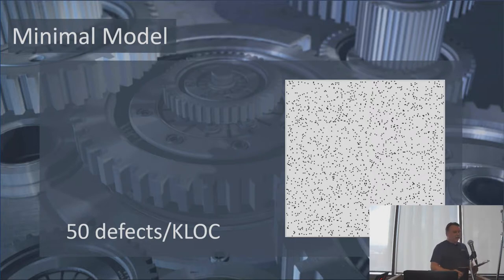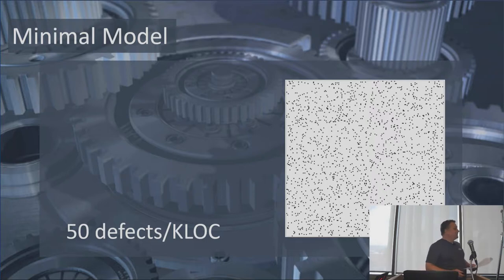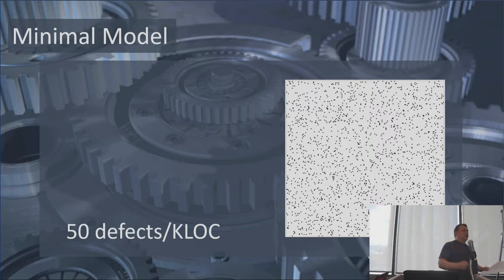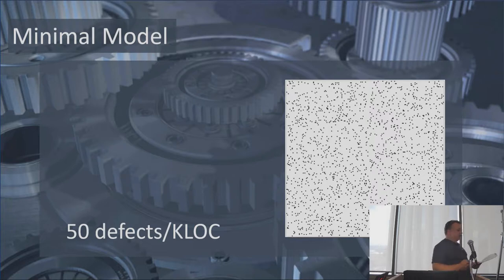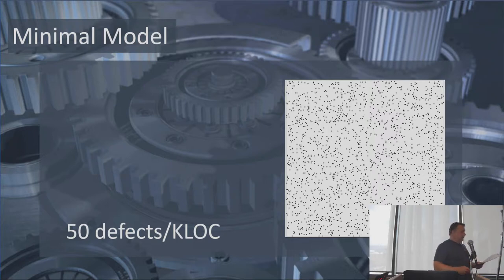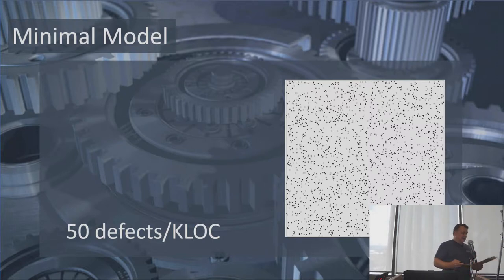First, there's the minimal model, and more than a few software projects use this model — just write the code, run your system tests, maybe send it out for beta, and ship it. To start, let's say developers have implemented all the code; at this point we're looking at 50 defects per KLOC. Here's a graphic representation of how dirty that code is — not too good.